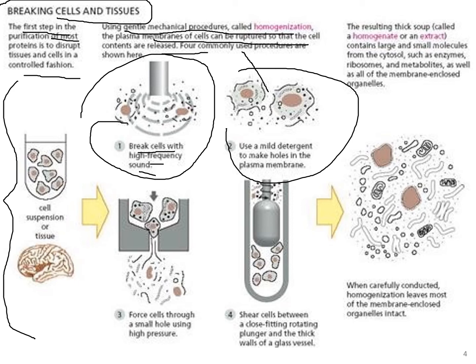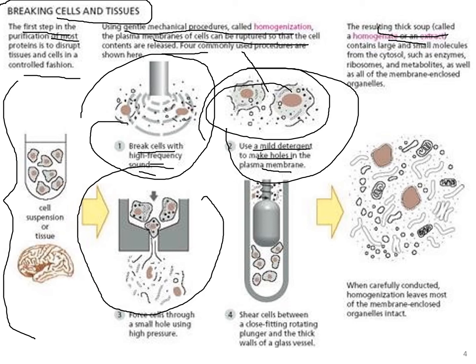The second step also involves using a mild detergent to make holes in the plasma membrane. The resulting thick soup is called a homogenate. The third step is forcing cells through a small hole using high pressure, so that cells break into smaller bits and pieces.